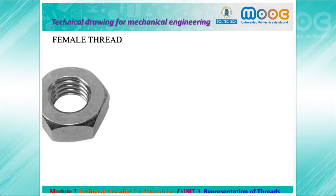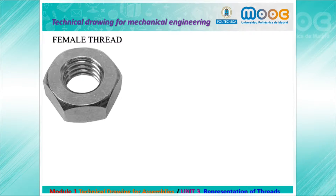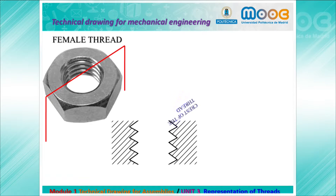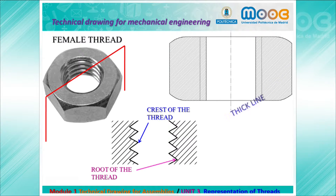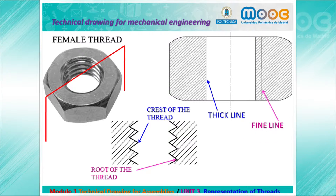For the female thread, something similar happens. We cut the nut again and we see the crest of the thread and the root of the thread. This is our simplified representation: a thick line representing the crest and a fine line representing the root.